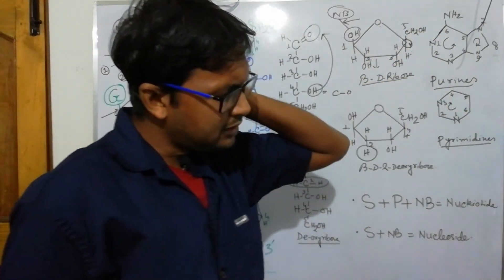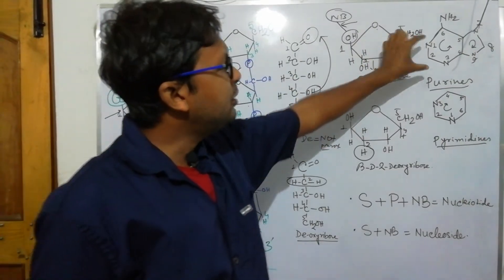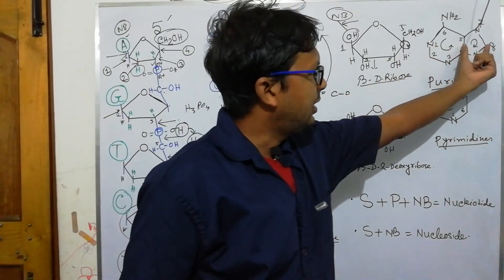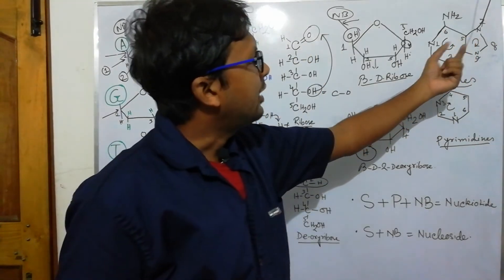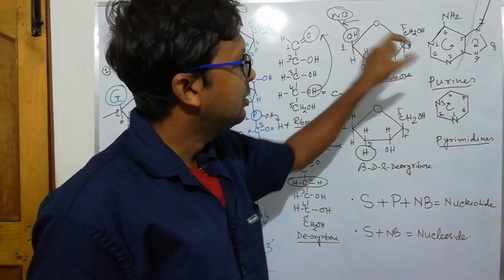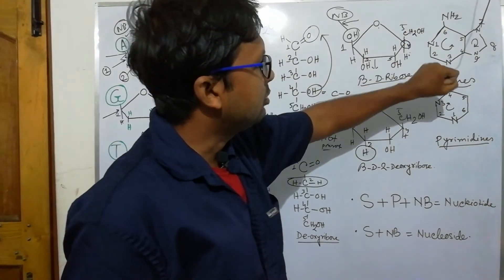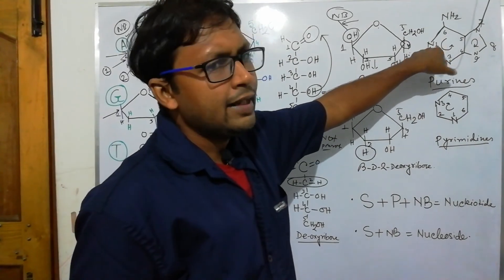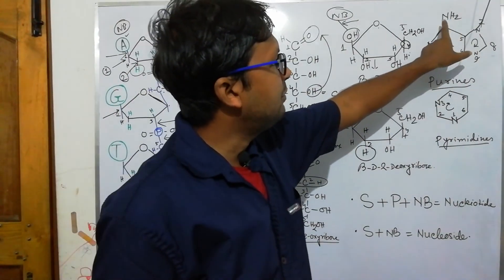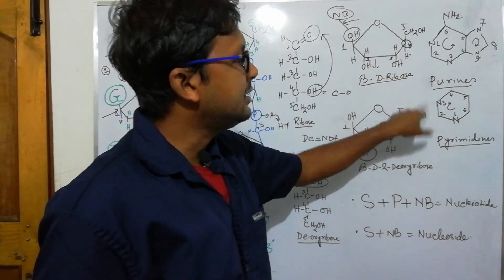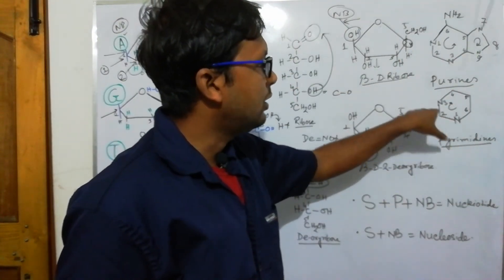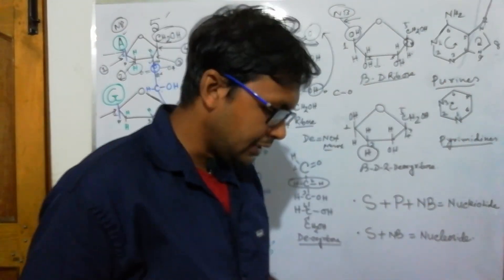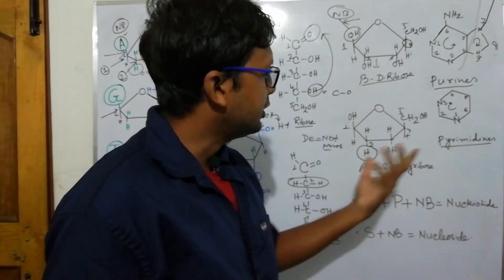Purines have a larger structure than pyrimidines. A purine has an imidazole ring fused to a six-membered ring, making it a bicyclic structure with nine atoms total. The numbering system for purines goes anti-clockwise for positions 1 through 6, then clockwise for 7, 8, and 9. Pyrimidines are numbered clockwise from 1 through 6. This numbering system is standard for all nitrogenous bases.